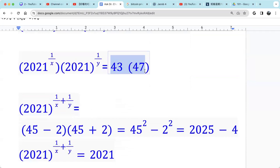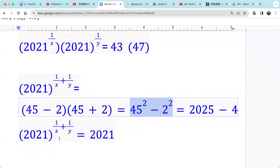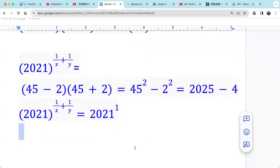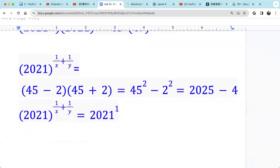Well, that equals 43 times 47. And 43, we can write as 45 minus 2. 47 is 45 plus 2. So that's the difference of two squares, which is 45 squared minus 2 squared. Well, 45 squared is 2025. And 2 squared is 4. 2025 minus 4, that's 2021. So 2021 is 2021 raised to 1. So we get 1 over x plus 1 over y equals 1.